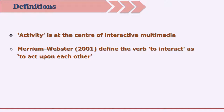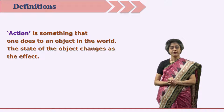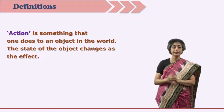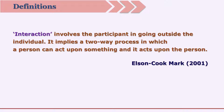Merriam-Webster dictionary has defined the verb 'to interact' as to act upon each other. If two parties — two persons, two objects, or one person and one object — are acting on each other, we can say that interactivity is taking place. In physics, when action happens, one object operates on the other and the state of the other object changes. In interactivity, the object acts upon the person and as a response the person acts upon the object. A CI package provides stimuli for the learner and the learner responds to those stimuli.